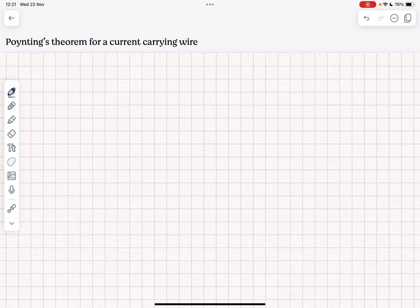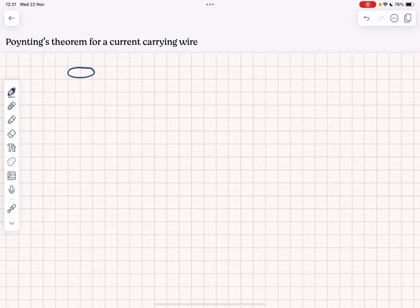I'm going to consider a simple example of the application of Poynting's theorem and this example is going to be a current carrying wire. So we're going to think about a simple cylindrical current carrying wire.